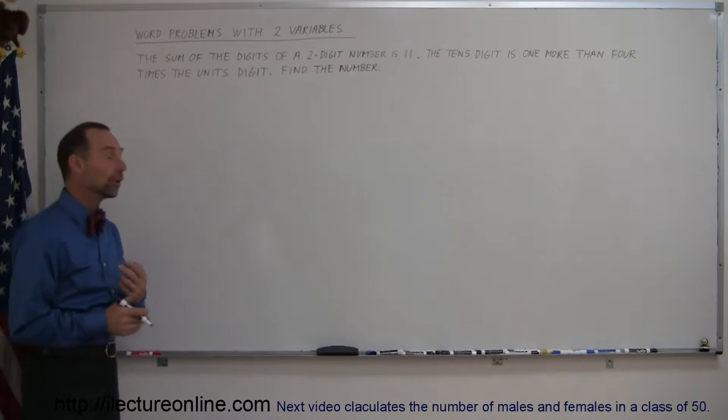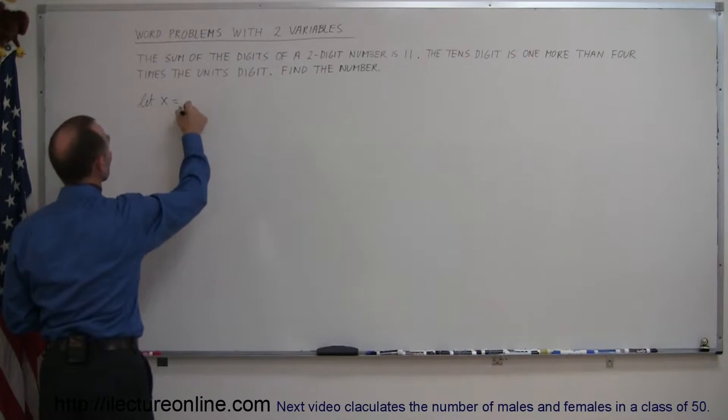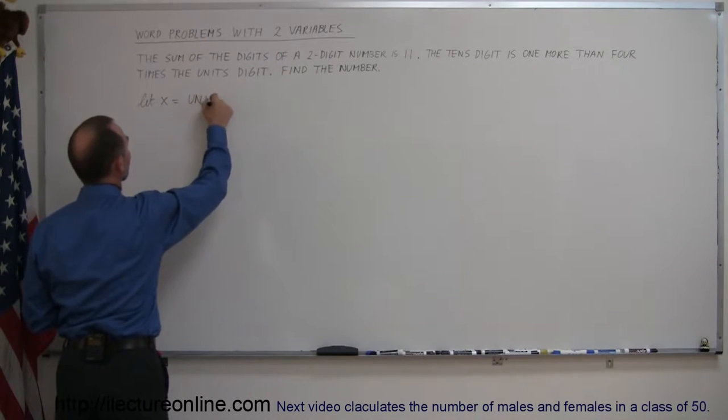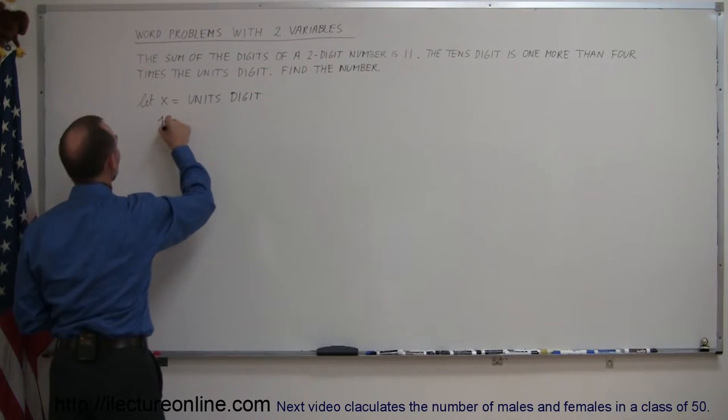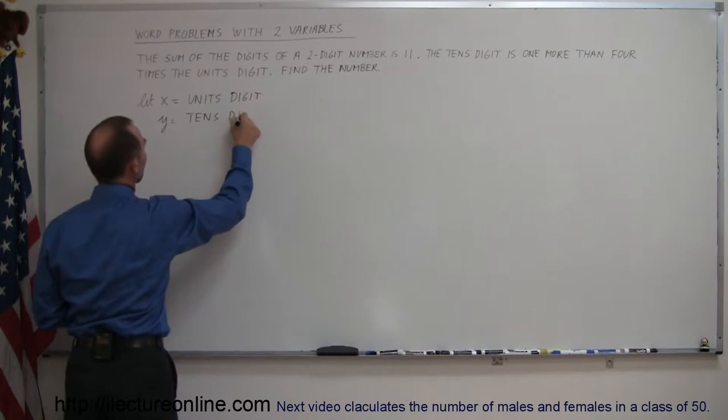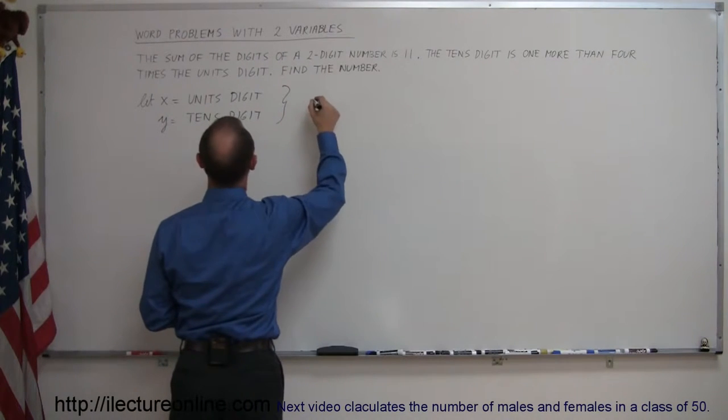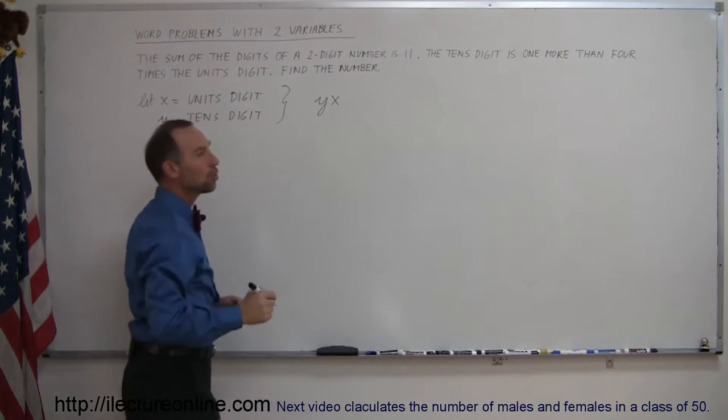Since you're going to be using two variables, you're going to define them. Let x equal the units digit and y equal the tens digit. So the number that we have will look like yx, where y is the tens digit and x is the units digit.